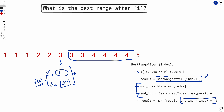What is the time complexity of this function? We call it for at most n unique index values (0 to n). For each call, we either recurse to i+1 (O(1)) or do a binary search (O(log n)). With memoization, each index is computed exactly once, so the total complexity of best_range_after is O(n log n).